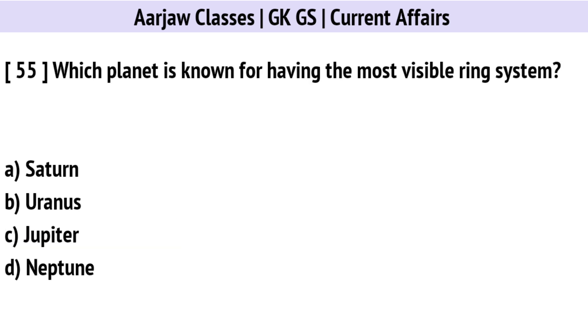Which planet is known for having the most visible ring system? Correct option is A: Saturn.